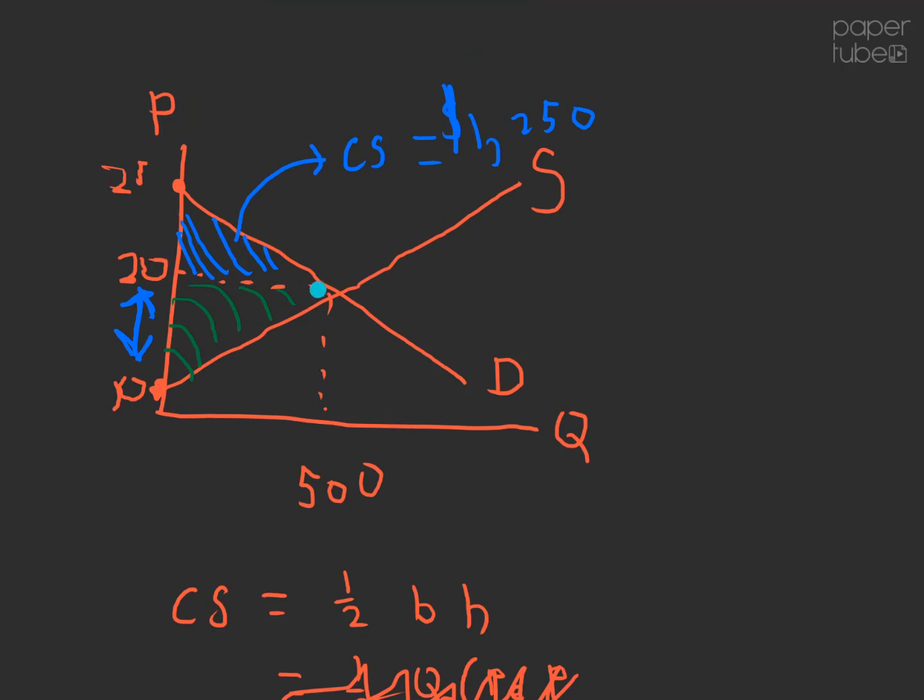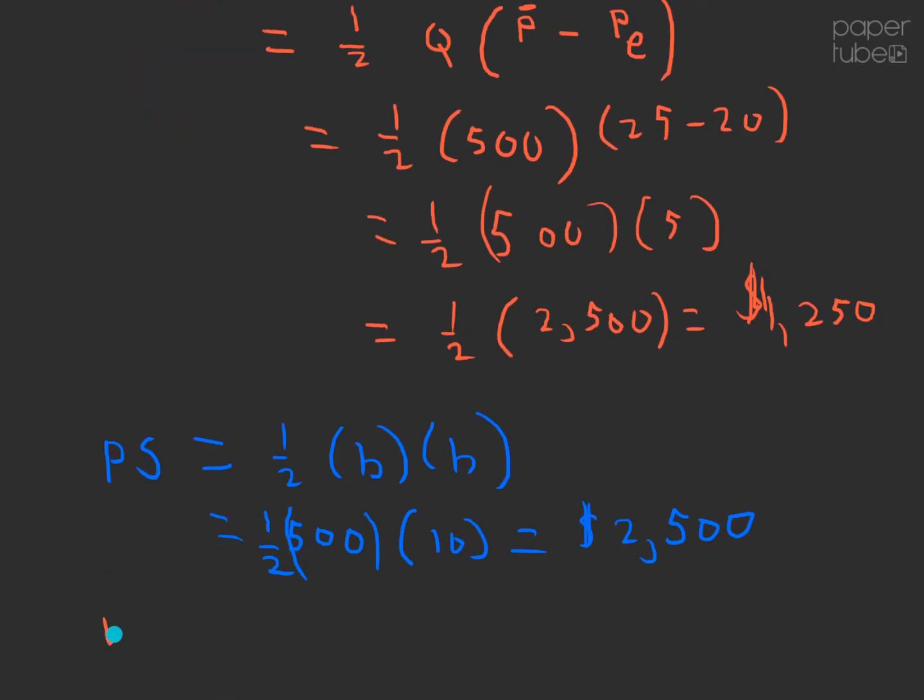Like before, let's shade that in on the diagram. That is the area below the price and above the supply curve. That green area is the producer surplus. That is the value that the producer gets from participating in this marketplace.